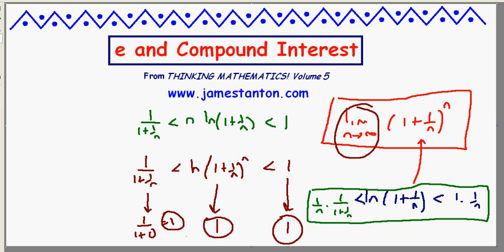And I've got something in between that's stuck between two things that want to be 1. And the limit, this obviously wants to be 1 as well. So basically I've now proven the limit as n goes to infinity of the log of 1 plus 1 over n to the nth power is 1.